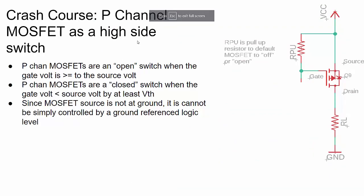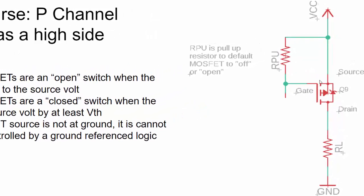Now let's look at a P-channel MOSFET. A P-channel MOSFET is often used as a high-side switch — our N-channel was connected to ground, but our P-channel is connected to the power source or electrical signal source, which is why we call it a high-side switch. Notice the MOSFET in this image is upside down compared to the last one: the source is on top, drain on the bottom, and gate on the side. This is a P-channel MOSFET because the arrow is pointing away from the gate — with an N-channel, it points towards the gate.